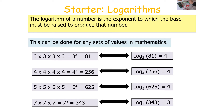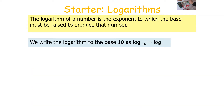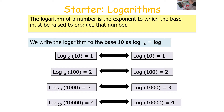We can have many different bases — on screen you can see log to the base 3, base 4, base 5, and base 7. We write the logarithm to base 10 as log 10, or just log. So log 10 equals 1, log 100 equals 2, log 1,000 equals 3, and log 10,000 equals 4.